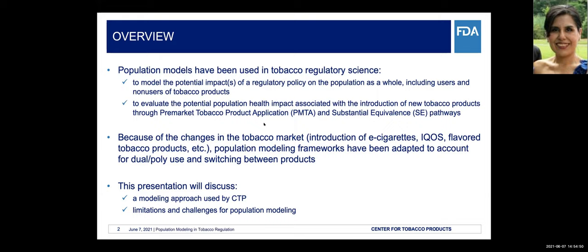Because of the changes in the tobacco market, which includes the introduction of new products such as e-cigarettes, IQOS, flavored tobacco products, and other products, population modeling frameworks have been adapted to account for dual and poly use switching behaviors between those products. This presentation will focus on a modeling approach that CTP used in the past, and the limitations and challenges for population modeling.